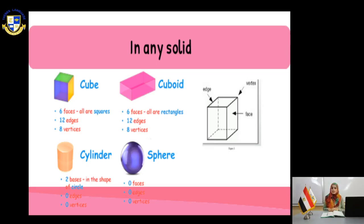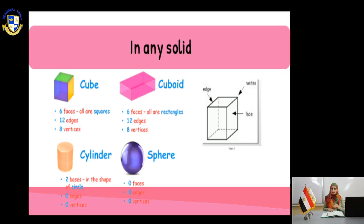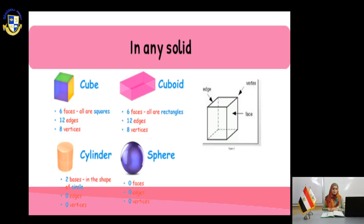In the cylinder — like the can of Pepsi that you can drink — you have two bases in the shape of a circle. When you look from above and from the bottom you can see two circles. You have no edge, you have no point, you have no vertices.